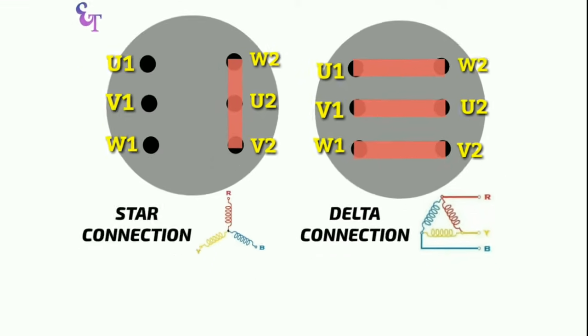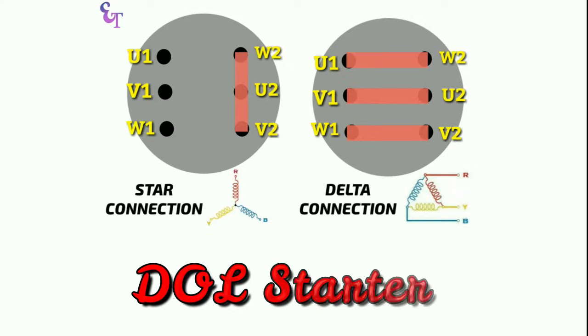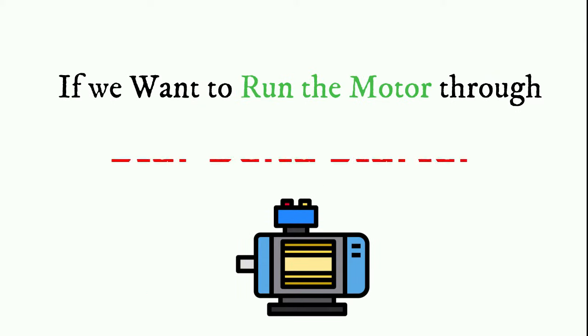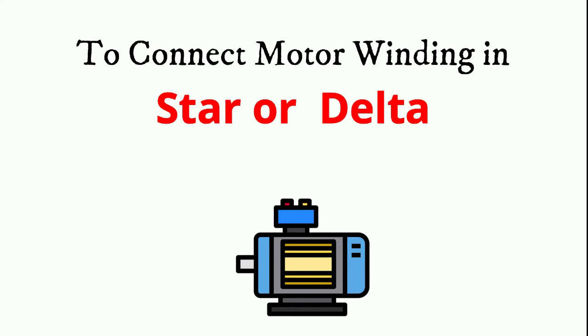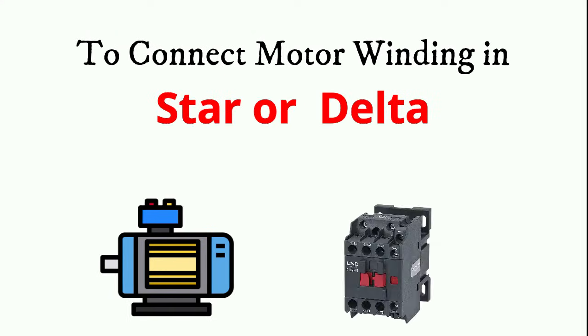We use this type of connection for DOL starter. If we want to run the motor through star delta starter then to connect motor winding in star or delta we use contactor.